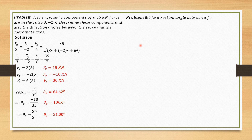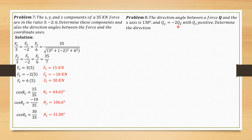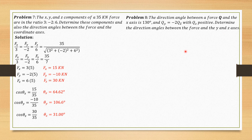Problem 8: the direction angle between a force Q and the X axis is 130 degrees, and QY = -2QZ where the Z component of Q is positive. Determine the direction angles between the force and the Y and Z axes — that is, find θY and θZ.